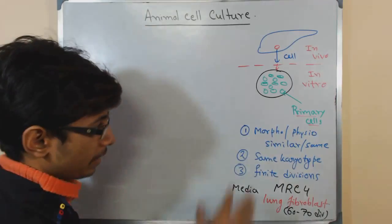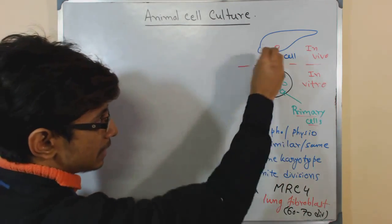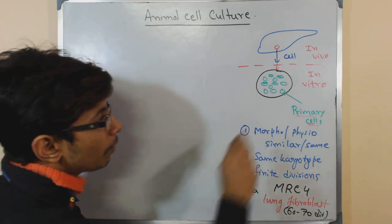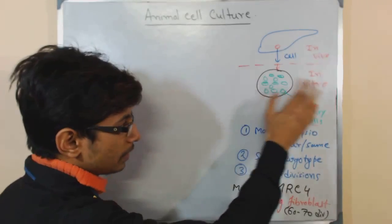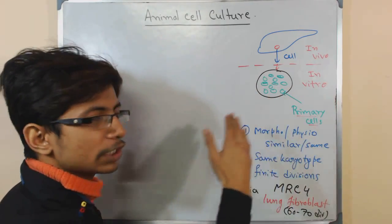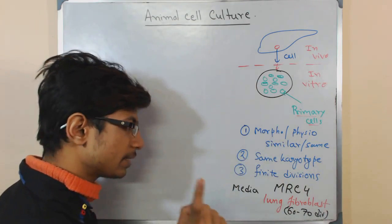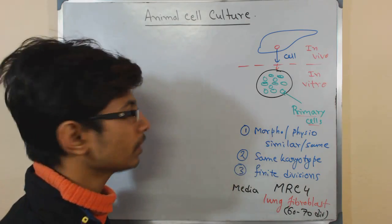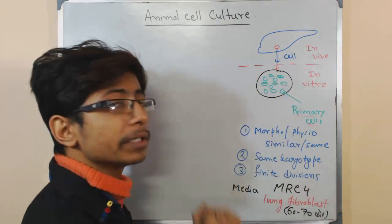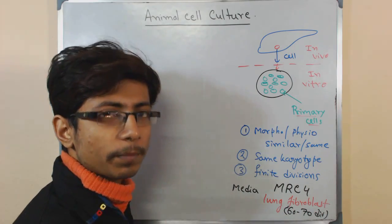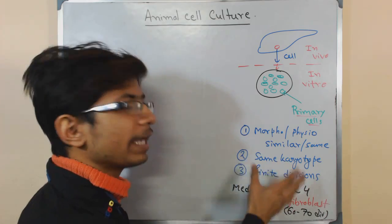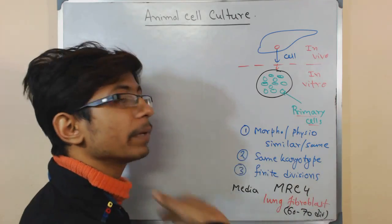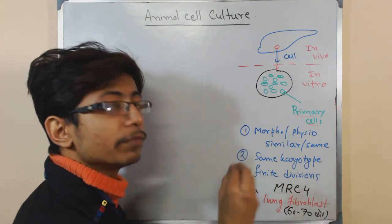For primary cell culture, we take the cell from the organ, place it into the medium, and cells start to grow — those are called primary cells. Once they start to grow and cover the whole medium as a primary cell, those cells are morphologically, physiologically, and biochemically the same as the parents. They also have the same karyotype and have less differentiated ability. Cell differentiation has not actually occurred during this process, making them ideal for study. However, they have a problem: they have a finite number of divisions, after which they will die, and growth in vitro is not that easy.